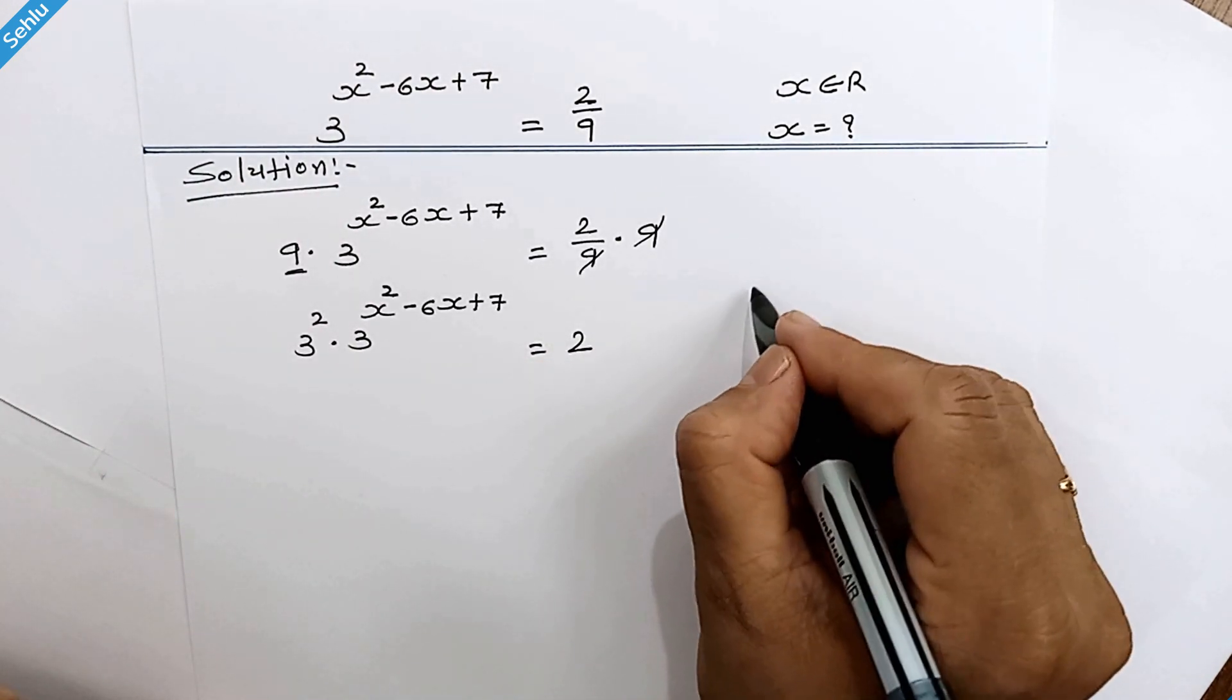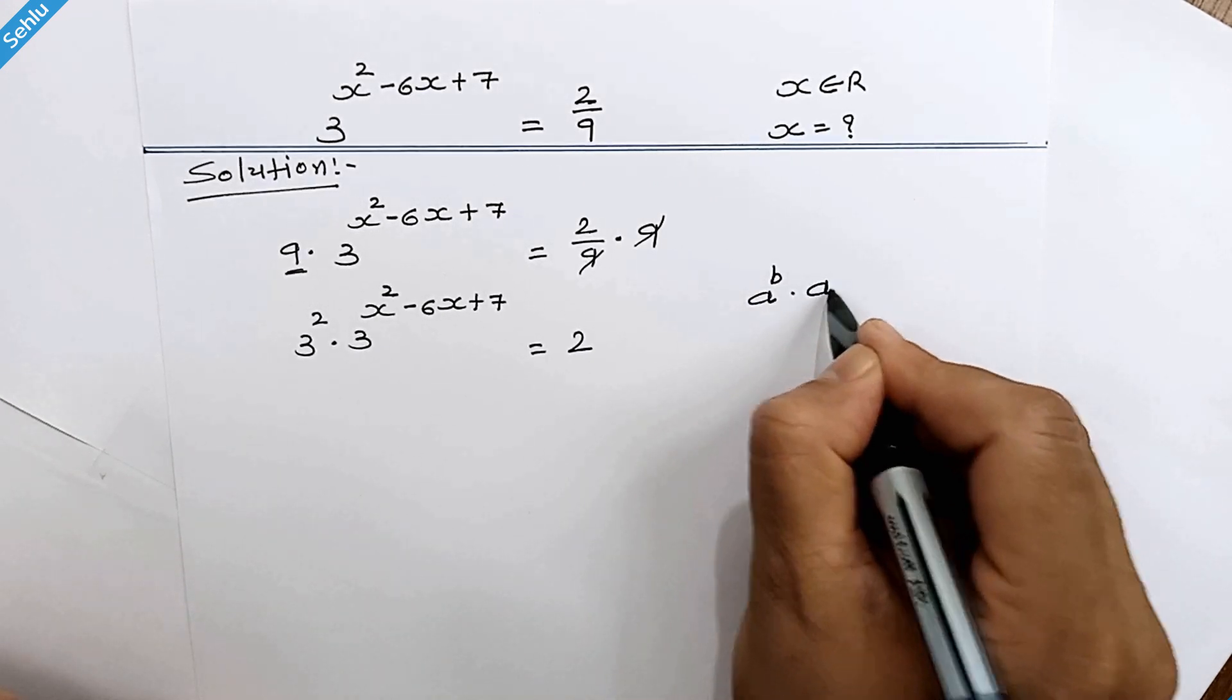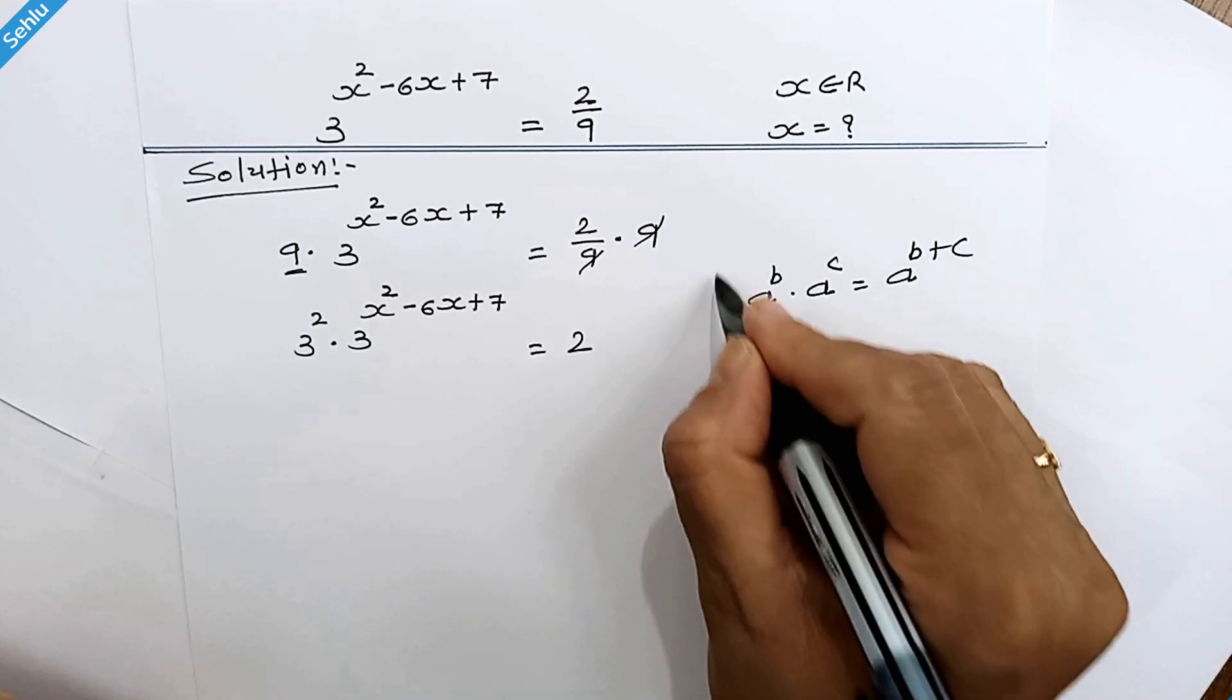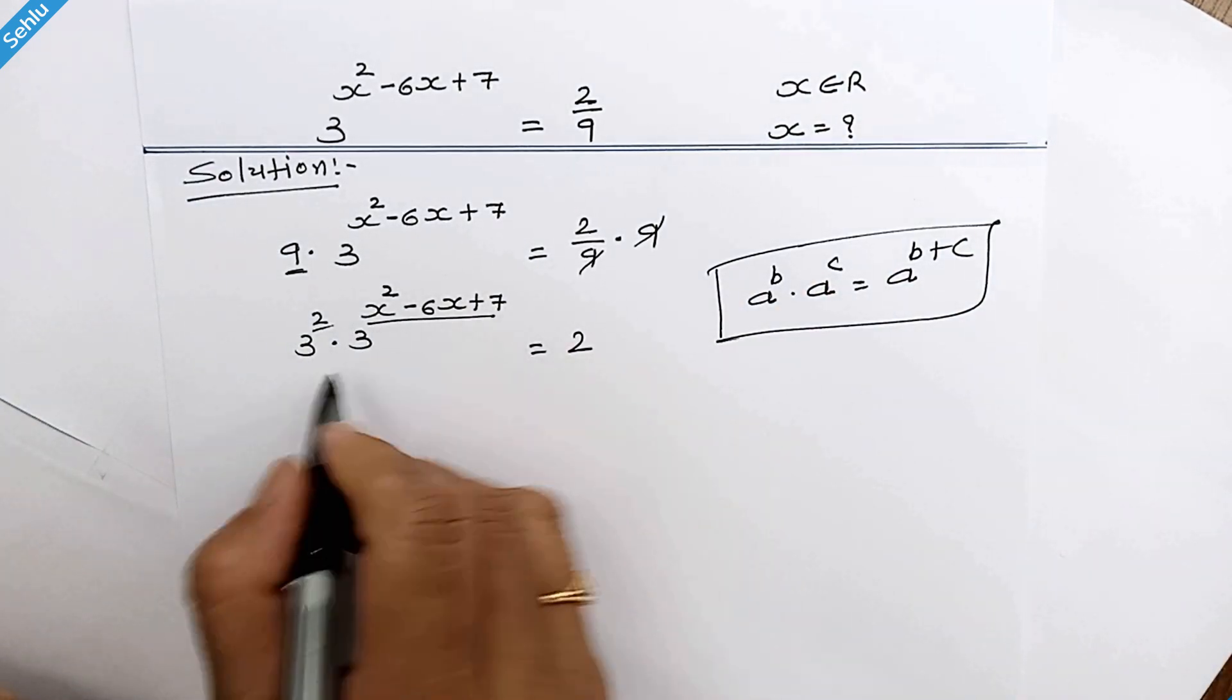Now let's recall a rule: when we have a^b times a^c, it can be a^(b+c). According to this rule, we can sum up these two.